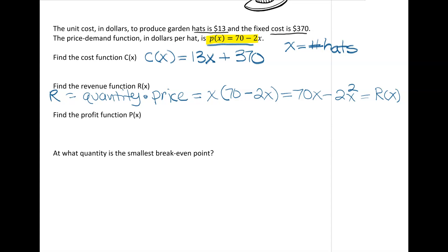Next, they ask us to find a profit function. Profit is always our revenue minus our cost. So to make our profit function P(x), we're going to take our revenue function, which is 70x - 2x², and subtract from that our cost function, which is 13x + 370. Now the parentheses are important here because we need to make sure that we distribute this negative when we combine our like terms.